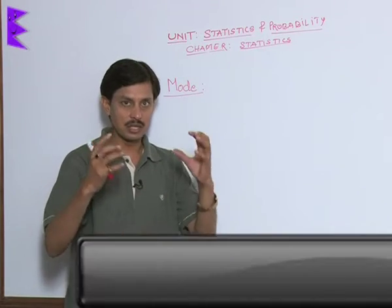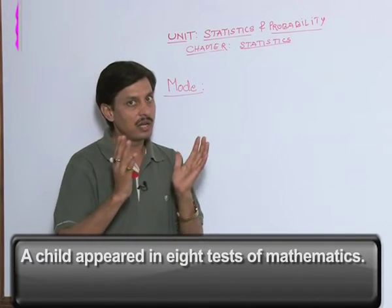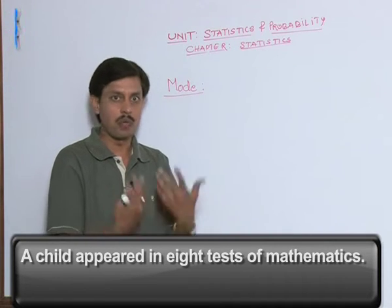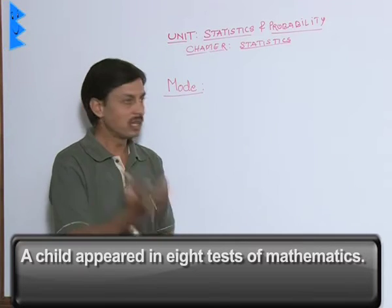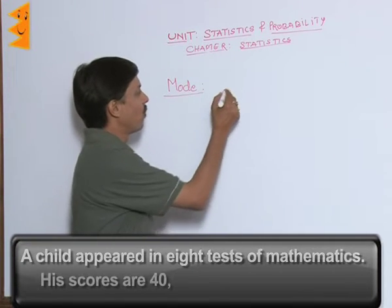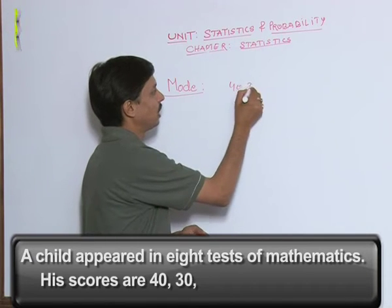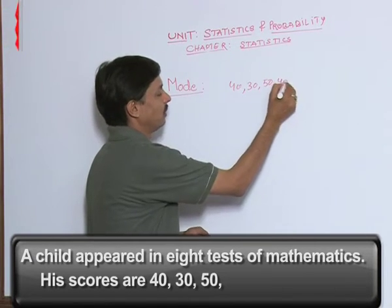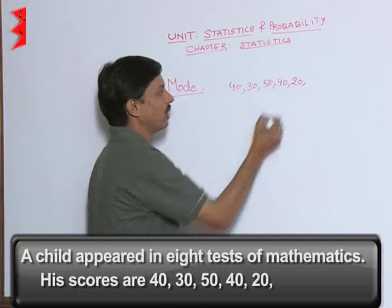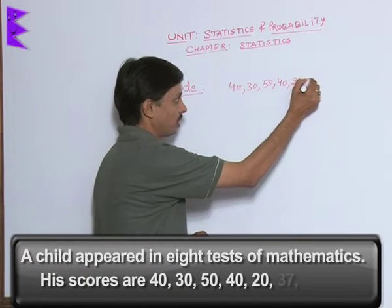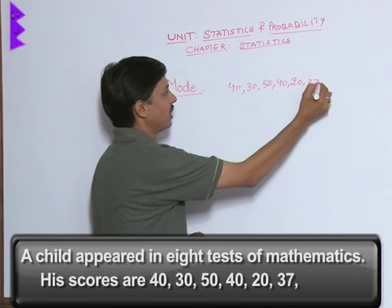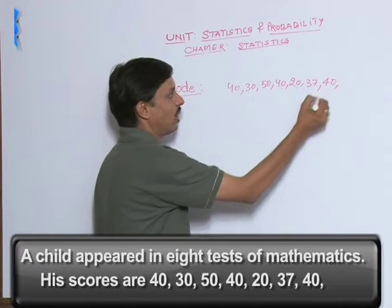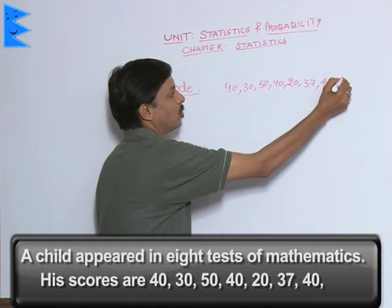Suppose a child has appeared in 8 tests, appeared in 8 tests of mathematics in a year and the scores are like this: 40 in the first, then 30, then once he has scored 50, then 40, once he has scored 20, once he has scored 37, once he has scored 40 again. So 1, 2, 3, 4, 5, 6, 7 and in one test he has scored 50.